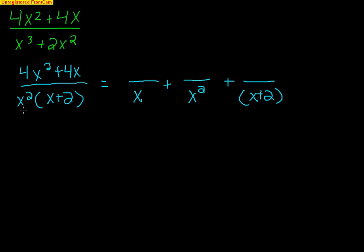For example, if it was x to the 20th, we would have 21 fractions: denominators x, x², x³, x⁴, and so on, all the way up to x²⁰, plus the last one with (x + 2). Whatever the exponent is, there's a fraction for each power. So we put constants A, B, and C over each part because we want to solve for each fraction.